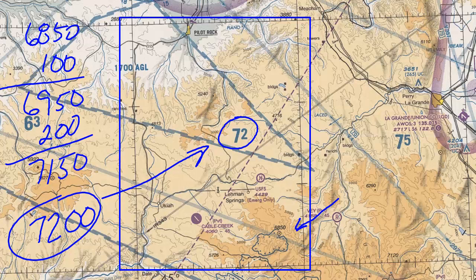There are some rare instances where you'll add more than 100 feet in that first step. This occurs when the contour interval for a specific quadrant is greater than 200 feet — in that case, you add half of the contour interval instead of 100 feet. For example, if the contour interval is 300 feet, you'd add 150 instead. This is calculated per quadrant and is separate from the contour interval shown on the chart legend. Keep this in mind in extremely mountainous or steep terrain, where the MEF may be calculated with an even greater margin of safety.